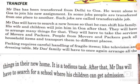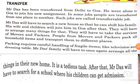Mr. Das will have to search for a new house so that he can shift his family. His wife and children will join him in Goa after that. They will have to arrange many things and take the services of movers and packers. People from movers and packers pick all household items and transport them to different places. Packing requires careful handling of fragile items. Fragile means easily breakable items like televisions and dressing tables.